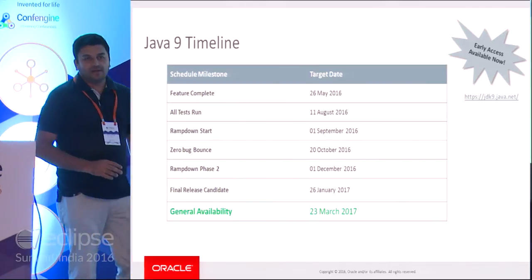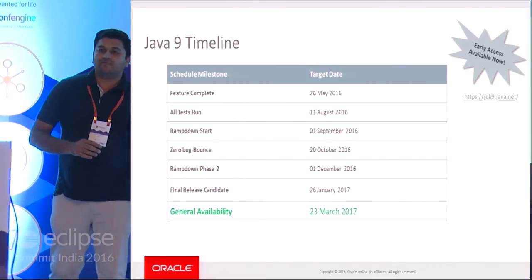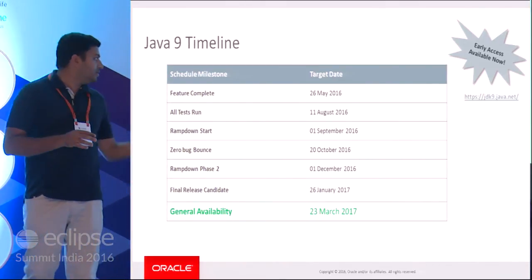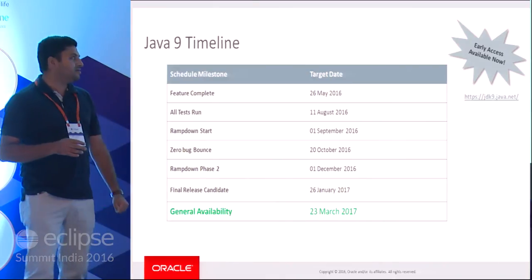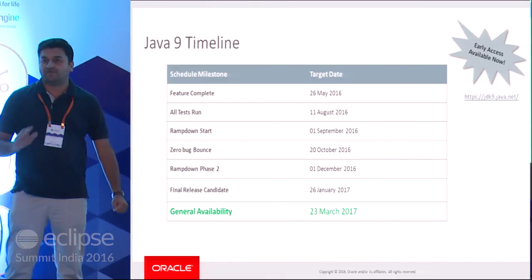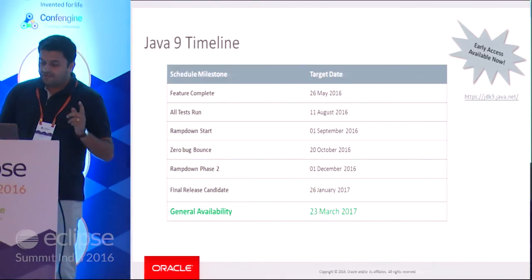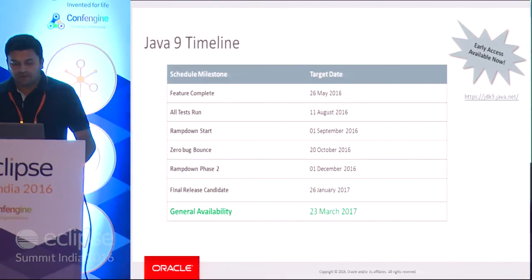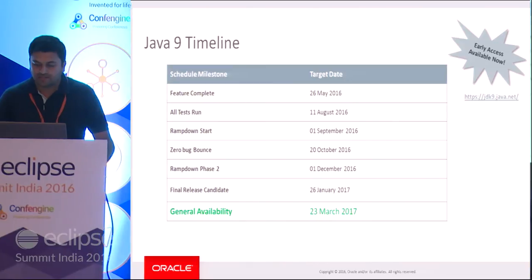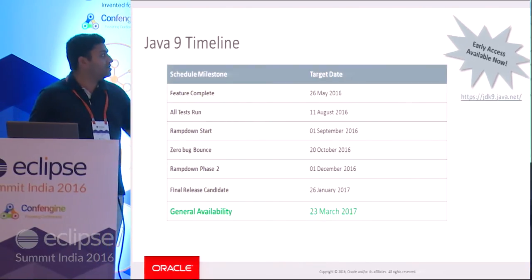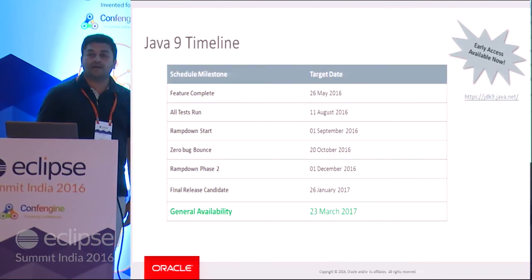So, when is Java 9 coming out? Java 9 will be released on March 23rd of 2017 — that's another six and a half months from today. You will have a Java 9 version available on 23rd March, but you already have the Java 9 early access available.